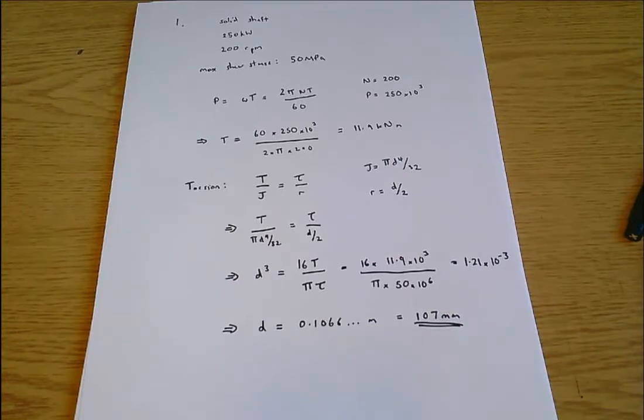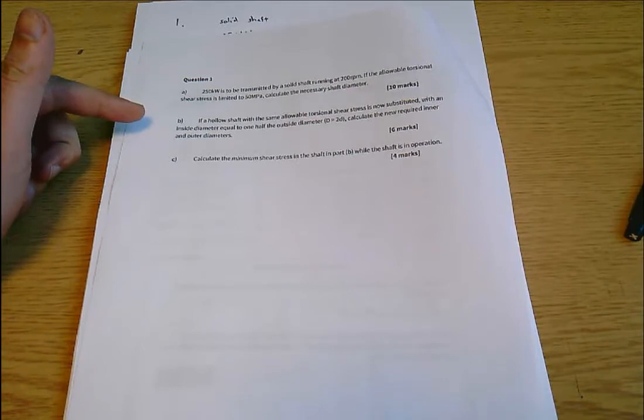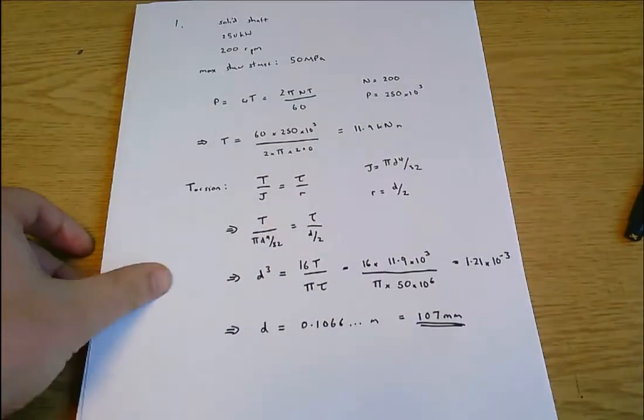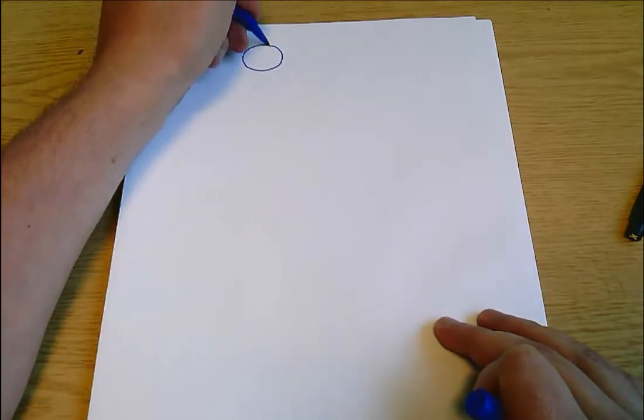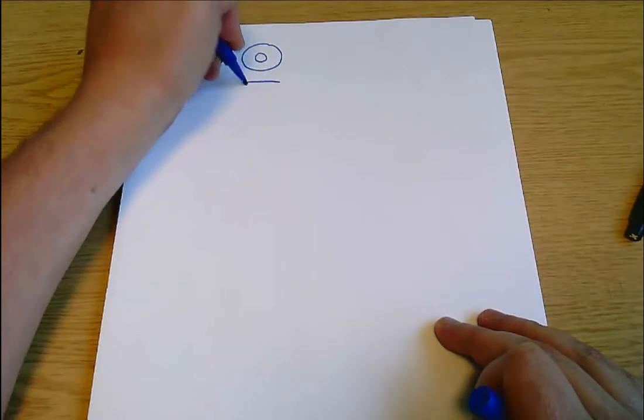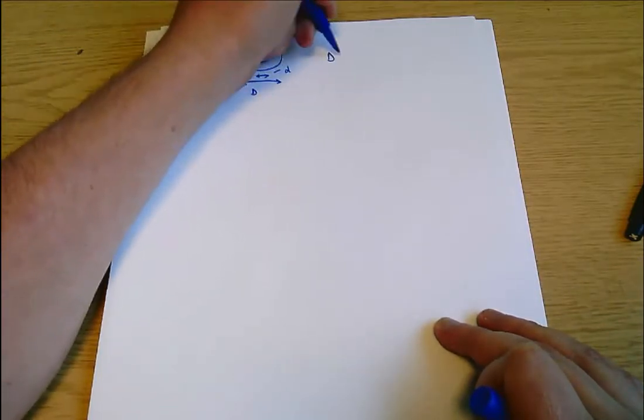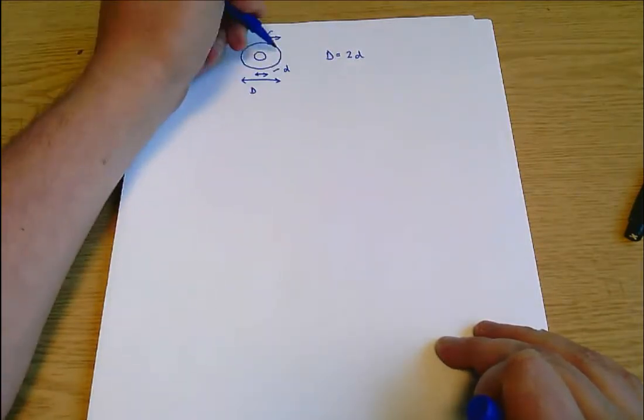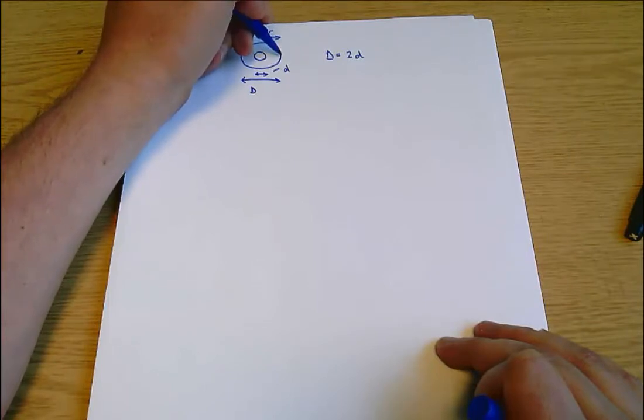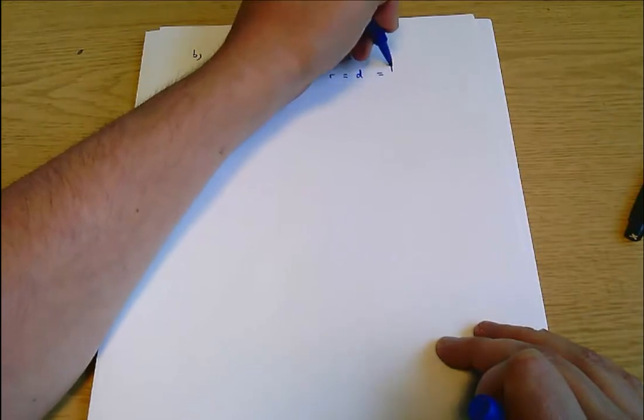Now we need to go back and look at the question. The second part of the question says we're interested in something with a hollow shaft. Part B says we're using a hollow shaft which looks something like this and we have an outside diameter capital D and an inside diameter small d, where d equals D over 2. We can also note that r equals d which equals capital D over 2.